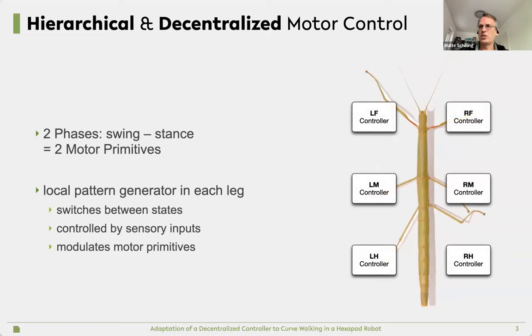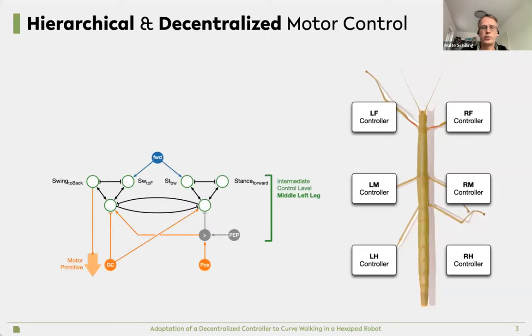The main idea of the WalkNet approach is that basically each leg has its own controller. There are two tasks: one is to decide which movement primitive to perform and how to perform this. If you're looking at movement primitives, there are two: one is the stance movement standing on the ground supporting the body, and one is a swing movement leaping to the front. Then there's in each leg a local pattern generator. It's important that this is switched a lot on sensory impulses, so in slow walking animals control is very driven by sensory inputs.